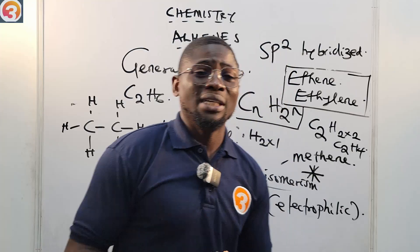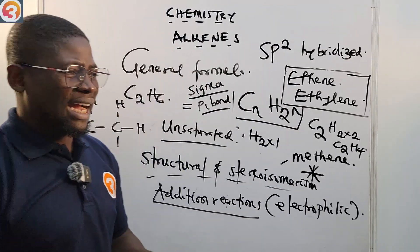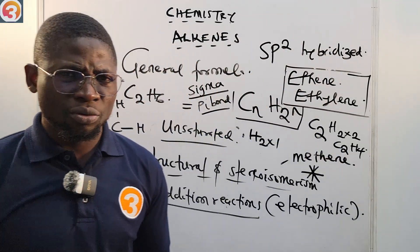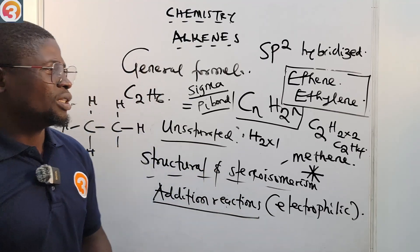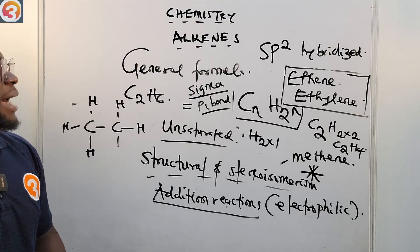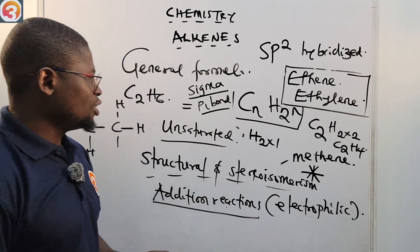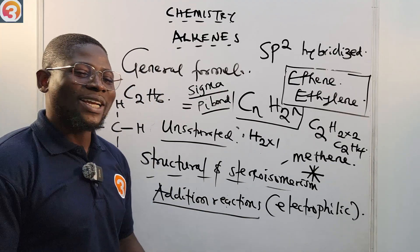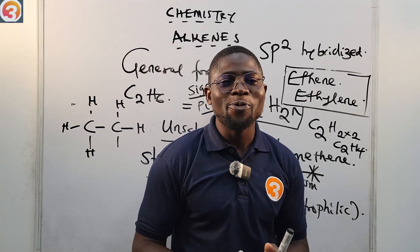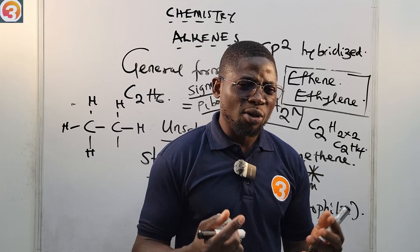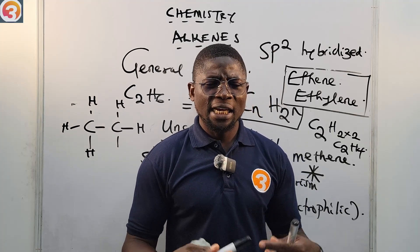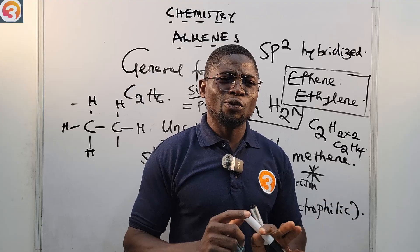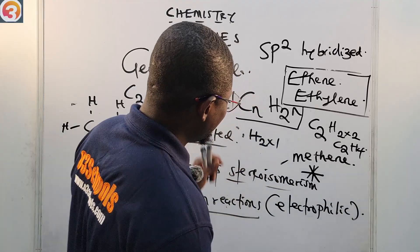That is all you need to know about alkenes as an introduction. To summarize: the general formula is CₙH₂ₙ; cycloalkenes have formula CₙH₂ₙ₋₂; their shape is trigonal planar; the first member is ethene or ethylene; bond angle is 120°; they undergo structural and stereo isomerism; and their characteristic reaction is addition. Enjoy chemistry — it is a very sweet subject!